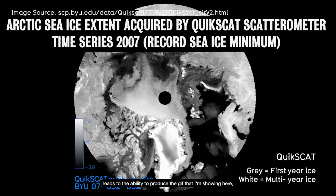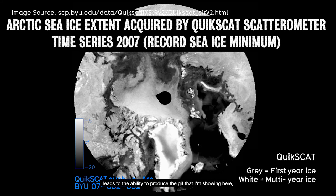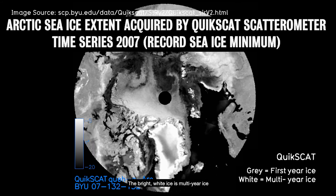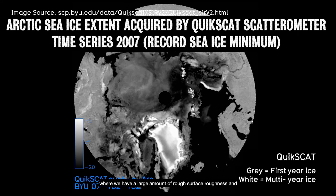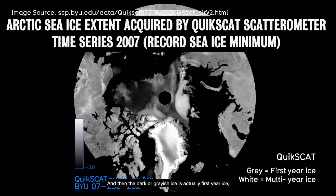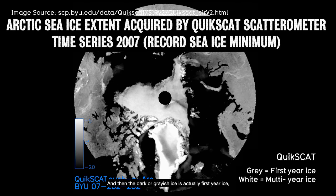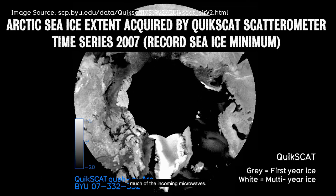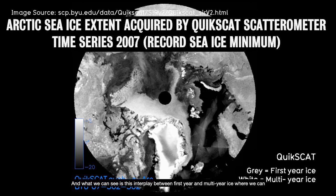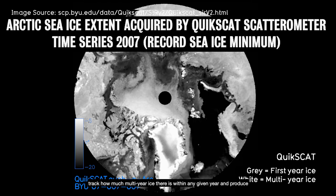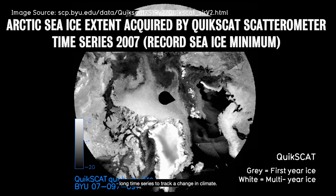This knowledge of different target interactions in ice leads to the ability to produce the GIF shown here, which is Arctic sea ice extent acquired by QuikSCAT. The bright white ice is multi-year ice, where large surface roughness and drained brine channels cause corner reflection. The dark or grayish ice is first-year ice, which has a lot of brine within the ice itself, absorbing much of the incoming microwaves. We can see this interplay between first-year and multi-year ice, tracking how much multi-year ice exists in any given year and producing long time series to track a changing climate.